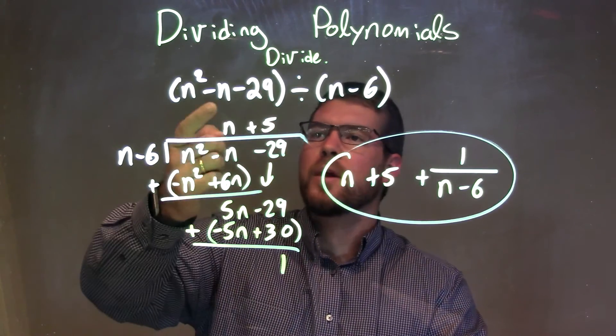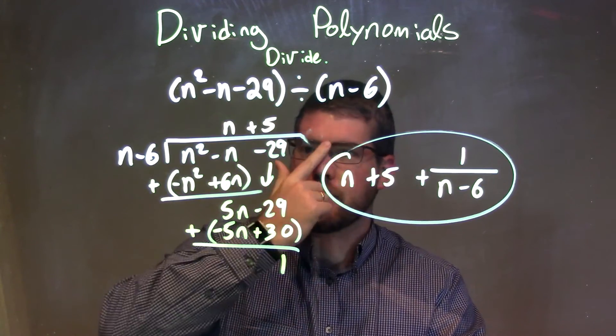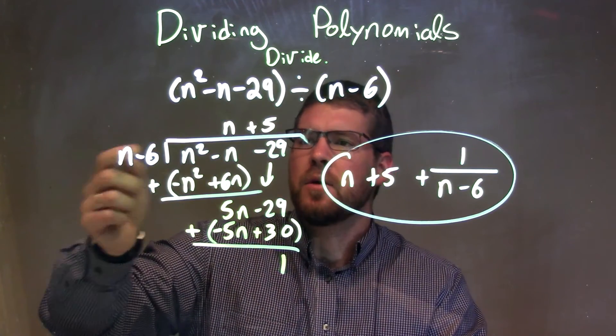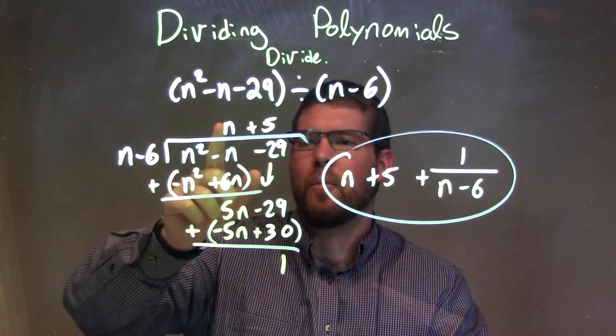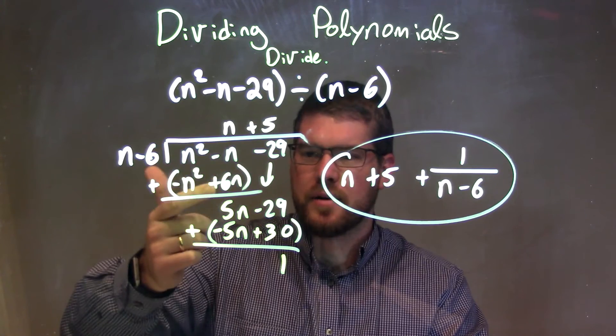So let's recap. We're given n squared minus n minus 29 divided by n minus 6. We do our long division here. We see, okay, what times n gives me n squared, which is n. Multiply that out to both parts and subtract it.